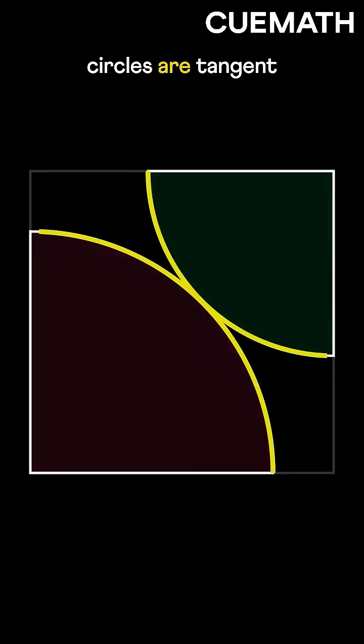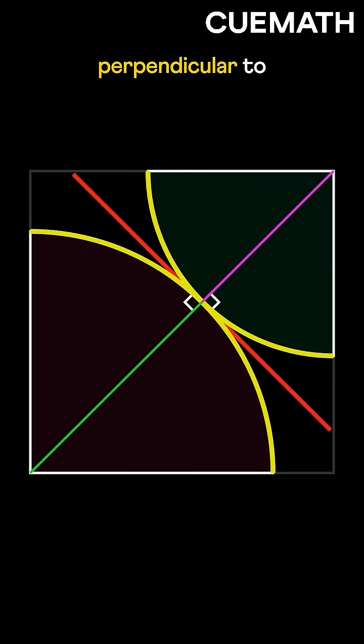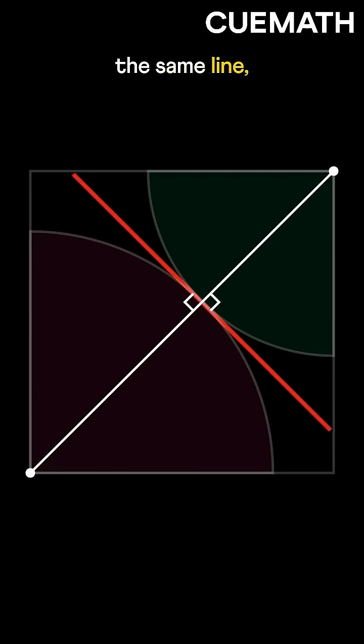Also, the quarter circles are tangent to each other. If we draw lines perpendicular to the tangent for each circle, they must pass through the centers respectively. These lines, being perpendicular to the same line, must coincide and form a single line.